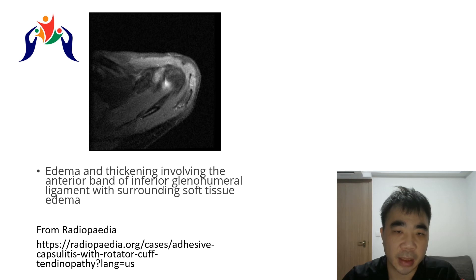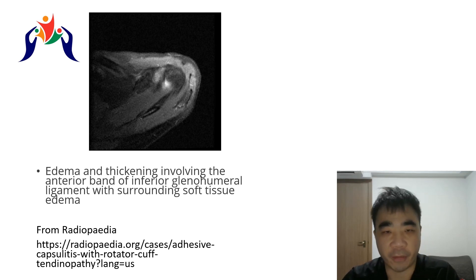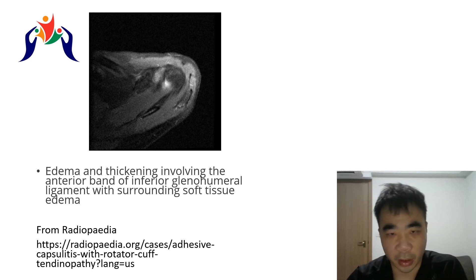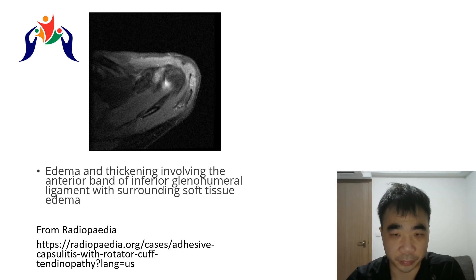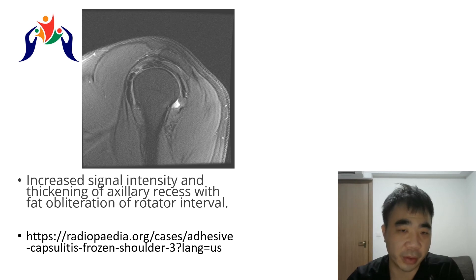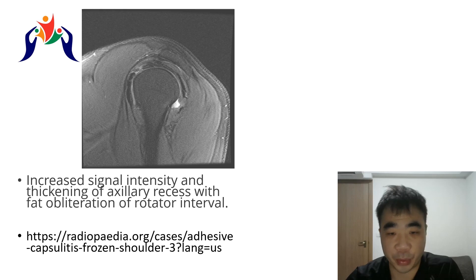In MRI reports for adhesive capsulitis, we can usually find mention of edema and thickening of the coracohumeral ligament, joint capsule, and surrounding tissue. Interestingly, this thickening and edema is not in a constant location — not necessarily the posterior capsule. Some patients I see have it more in the subscapularis region, and also in the inferior part of the joint capsule.